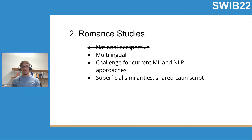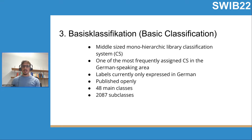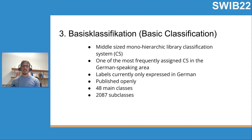All these languages share some similarities — for example, they share the Latin script. As a classification system, we use Basis Classification, or in English, Basic Classification. This is a mid-sized, mono-hierarchic library classification system and one of the most frequently assigned classification systems in the German-speaking area. The labels are currently only expressed in German. This classification system is published openly and contains 48 main classes and a little more than 2,000 subclasses in total.